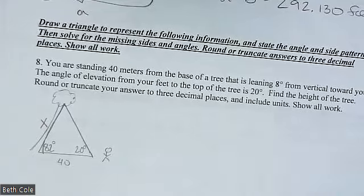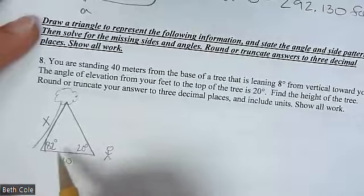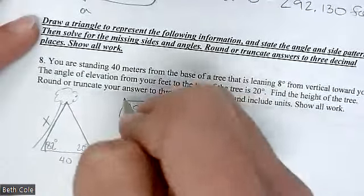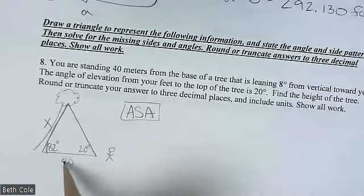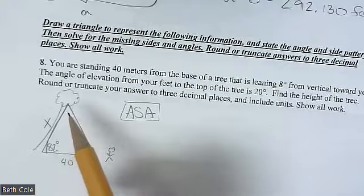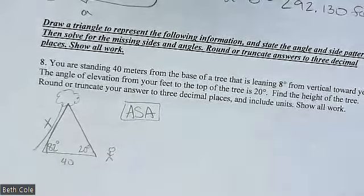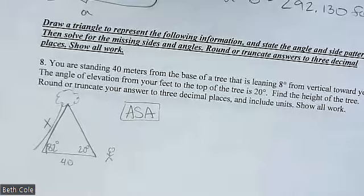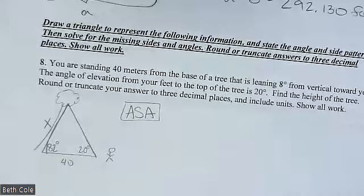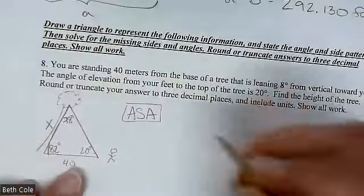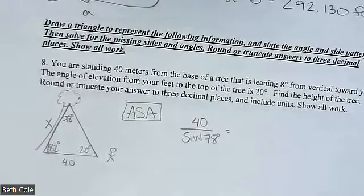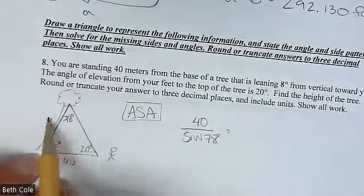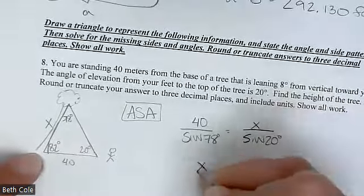You need a side across from an angle. The only side you have is 40, and you need the angle across from it. Do 180 minus the other angles to get it — that gives you 78 degrees. You don't have to show work for that step. Then set it up: 40 over sine 78 equals X over sine 20. Type it in: 40 times sine 20, close parenthesis, divided by sine 78. I got 13.986 meters.